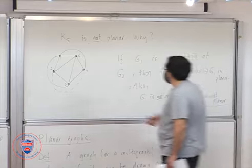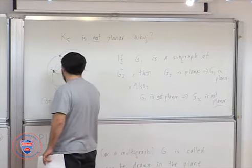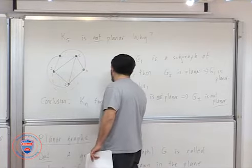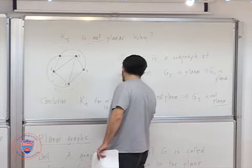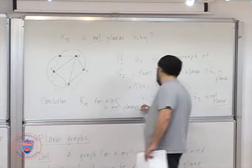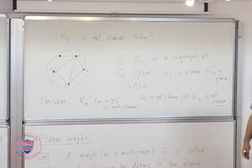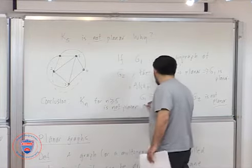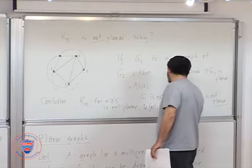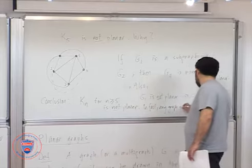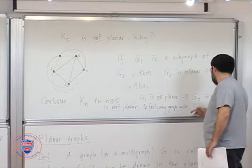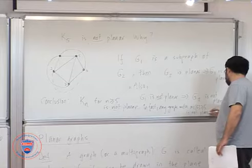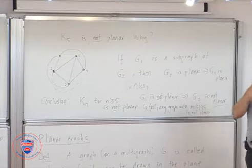So anytime you have a bigger graph which is planar, it tells you the smaller one is also planar. Similarly, if you reverse that, if G1 is not planar, then G2 is not. So because K5 is not planar, the conclusion you can get from this is very strong. Any graph which has clique size 5 is not planar. So any graph, in fact, any graph which maximum clique size is at least 5 is not planar.